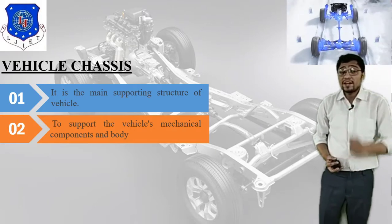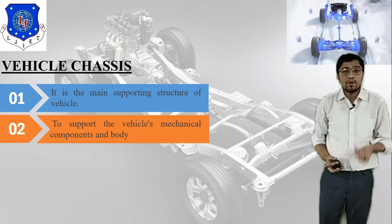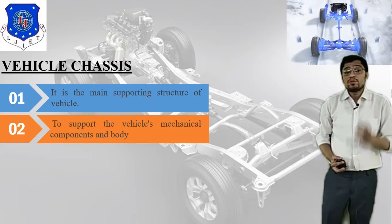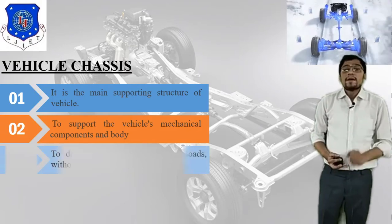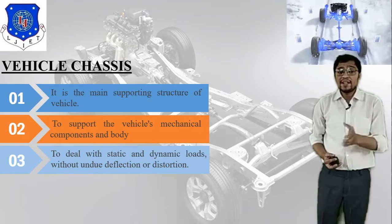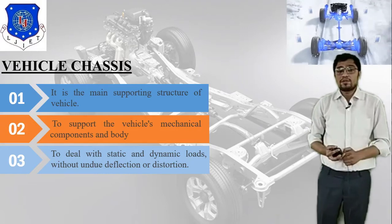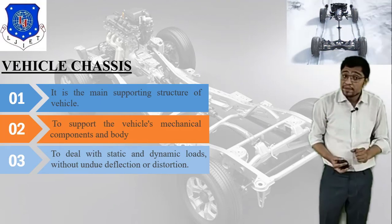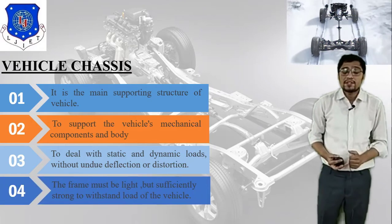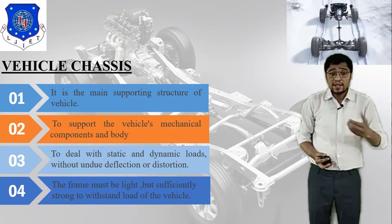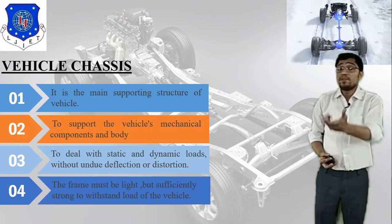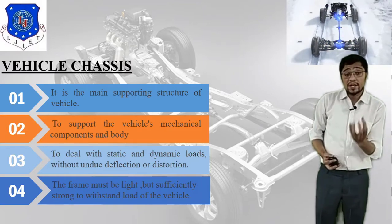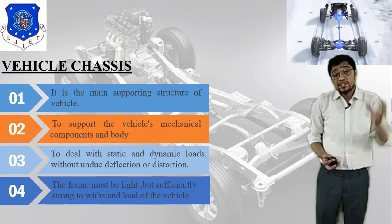The second property is that the chassis supports the vehicle's mechanical components and body, because the body is placed over the frame. Third, it must deal with static and dynamic loads without undue deflection or distortion — this is related to passenger load and different kinds of material loads. Fourth, the frame must be light but sufficiently strong to withstand the load of the vehicle. So vehicle chassis is a frame connected to four wheels on which the body is placed.